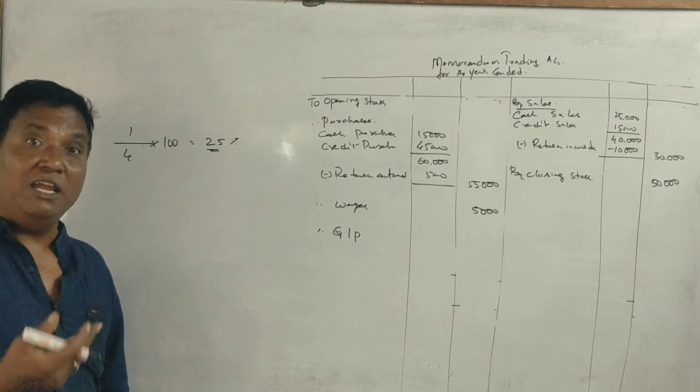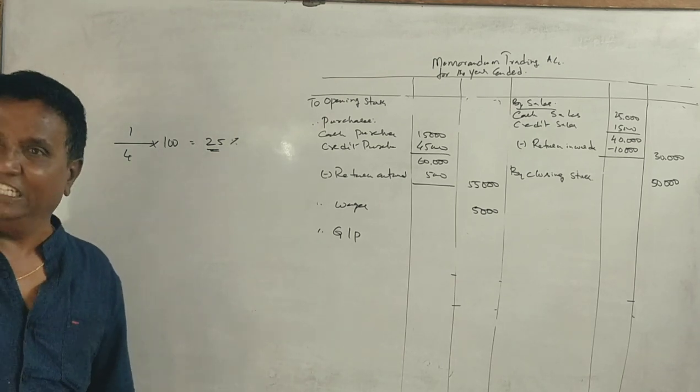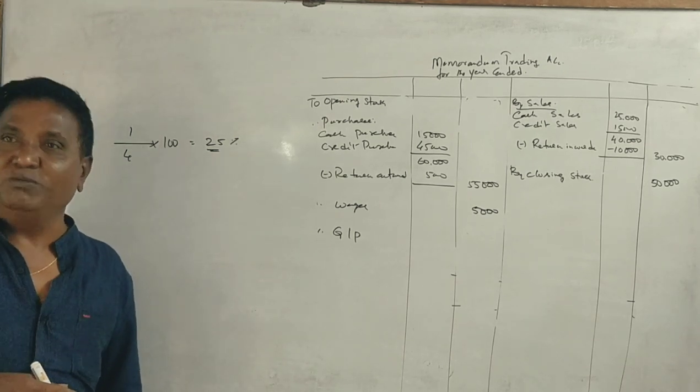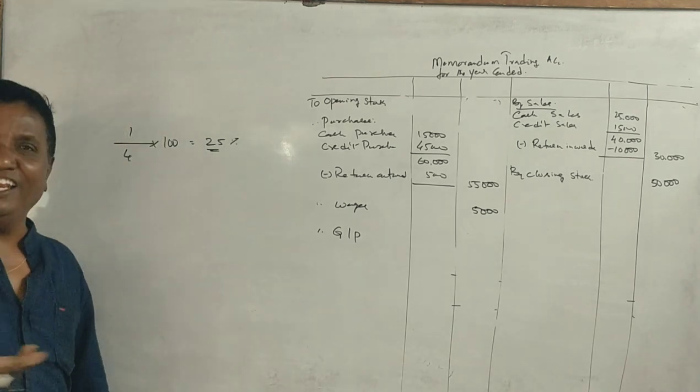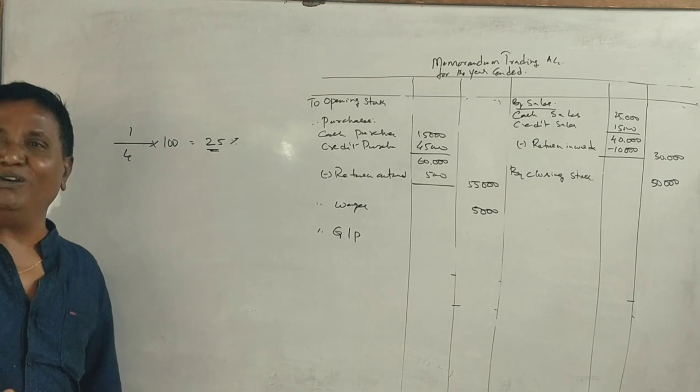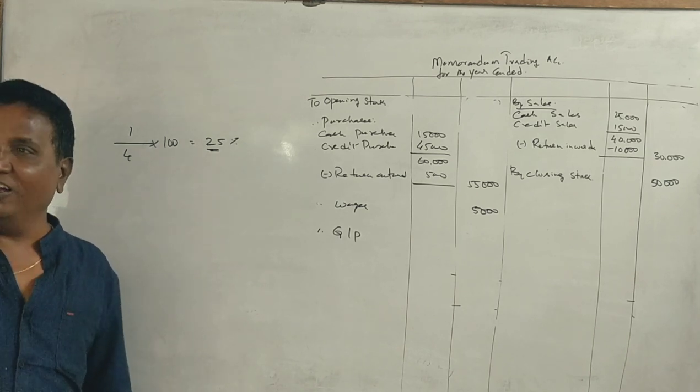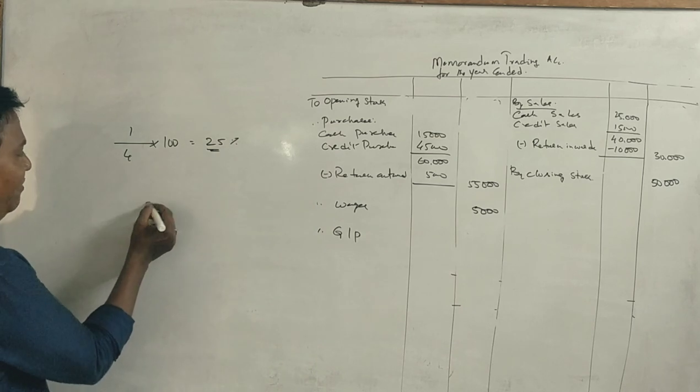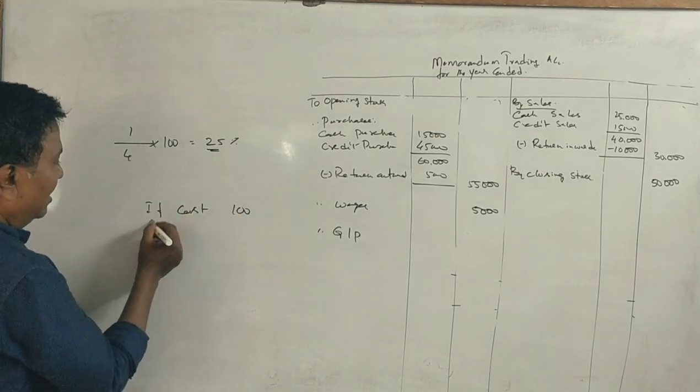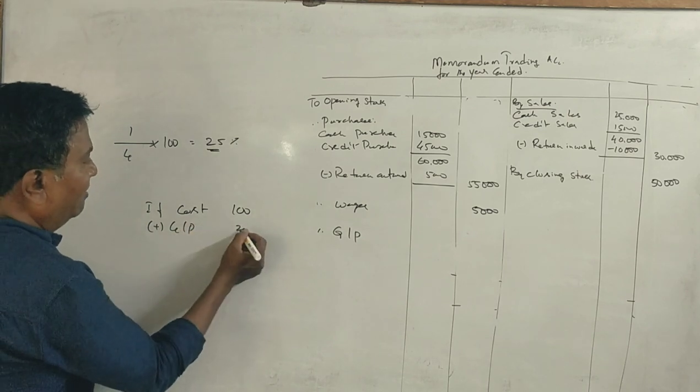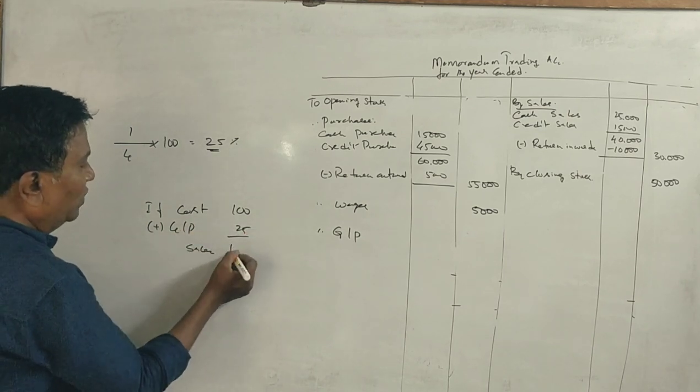This problem shows 25% on cost, or one-fourth on cost. If cost is 100, GP is 25, and sales is 125.